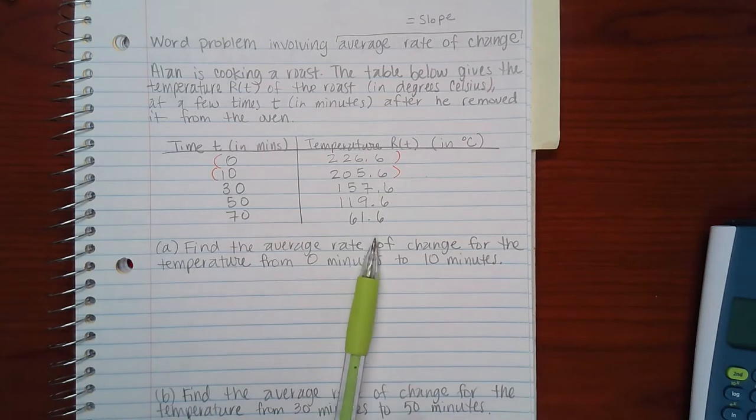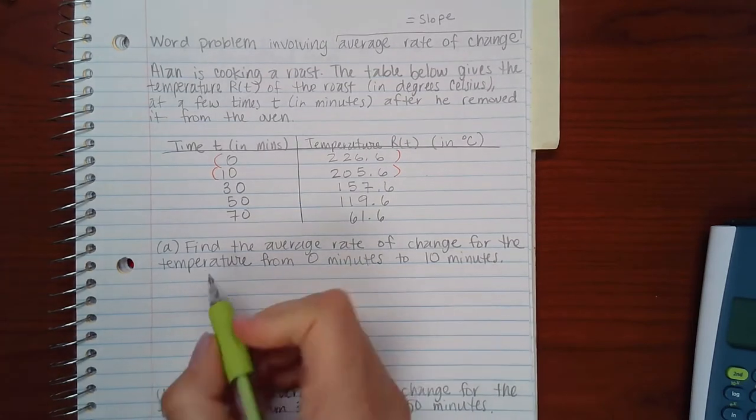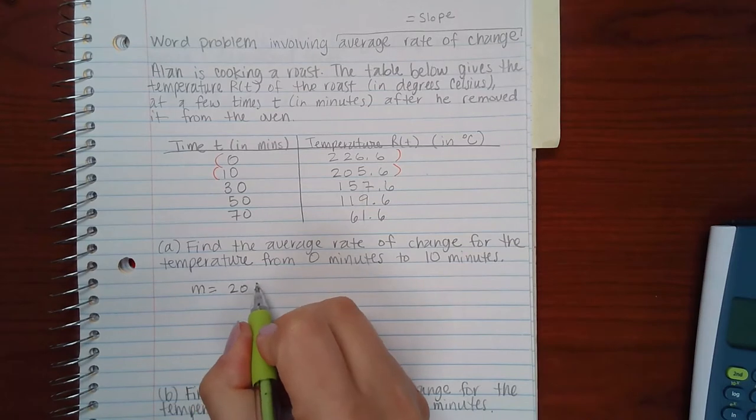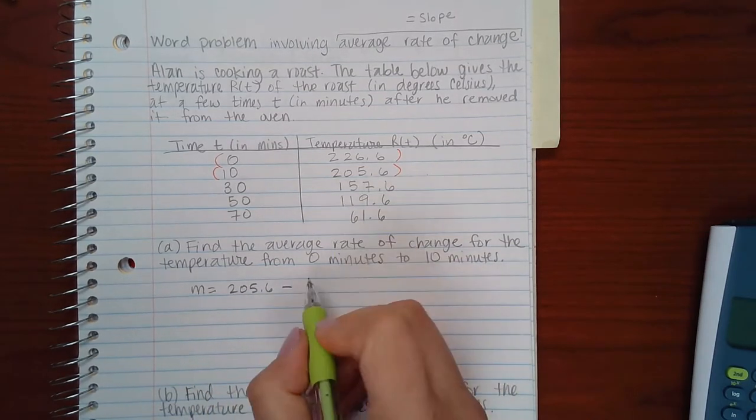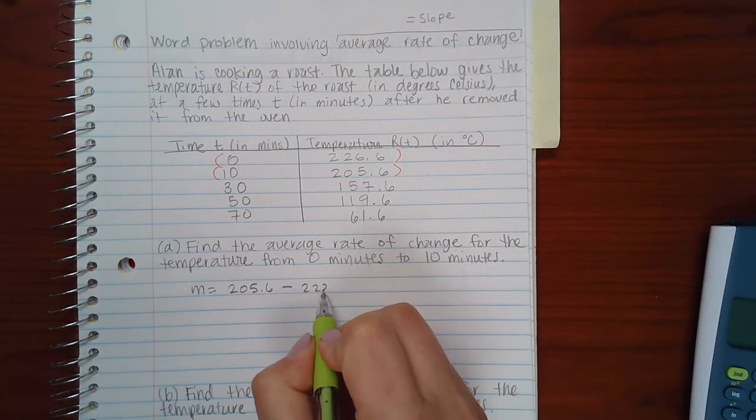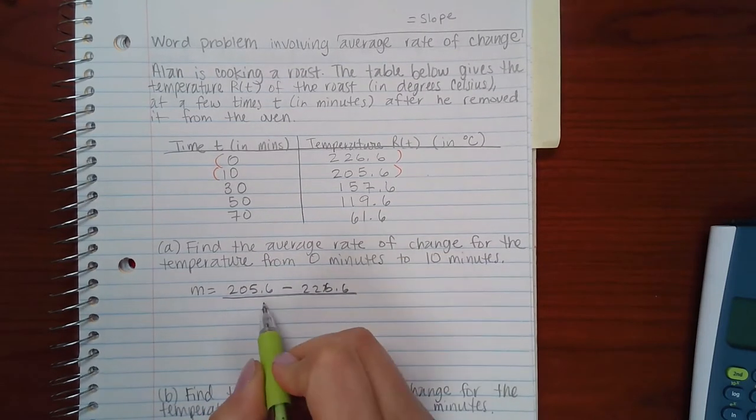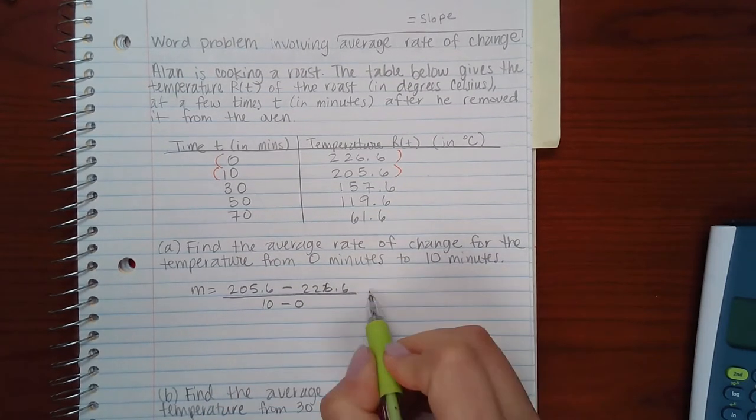These are my X's and these are my Y's. So we're going to find the slope: the second Y value minus the first Y value over the second X value minus the first X value.